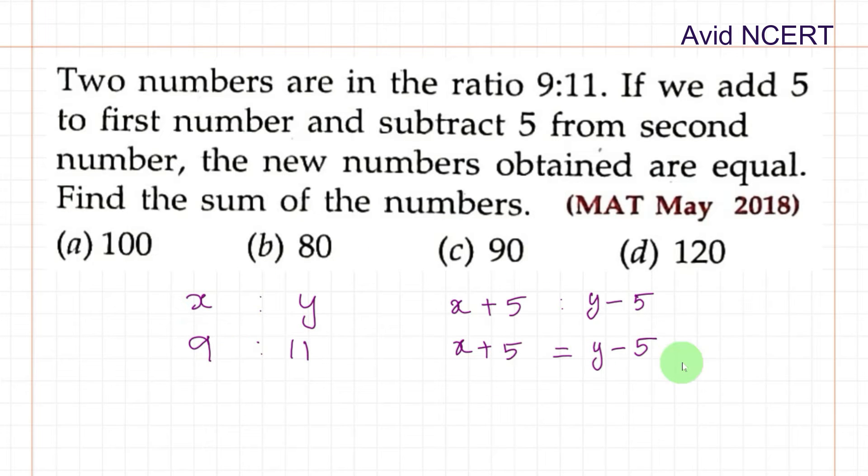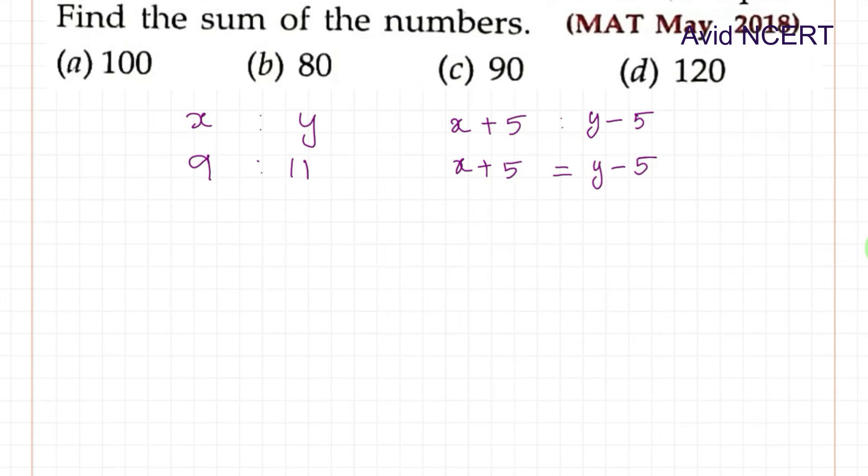So by solving these two, we can find the value of x and y. In this, x by y is 9 by 11. So where x equals, cross multiplication, 9 times y which is 9y divided by 11. And we are going to substitute this value of x in this equation.